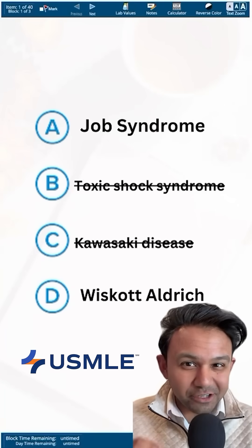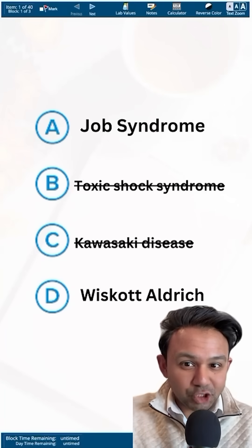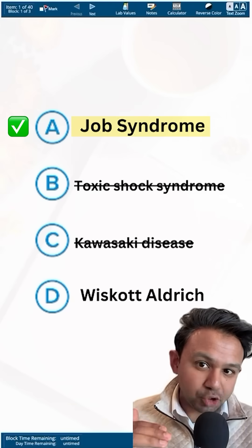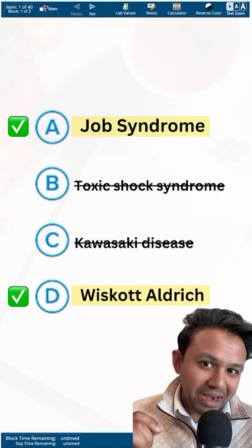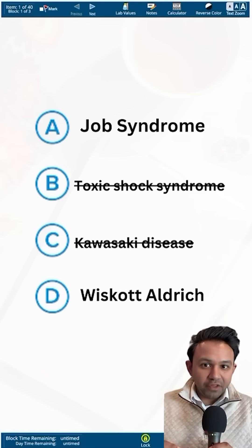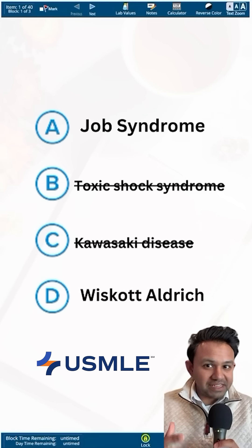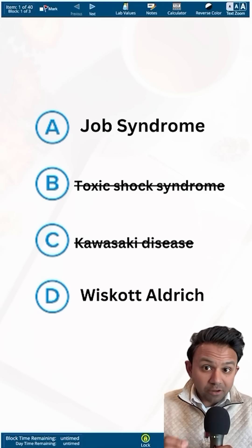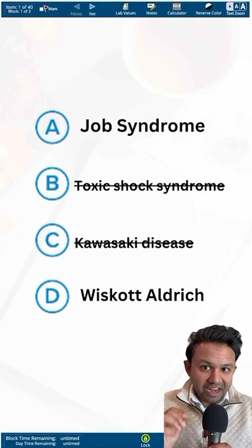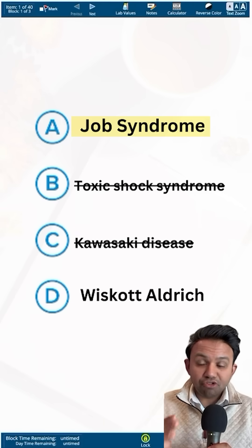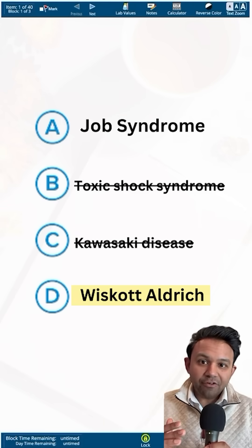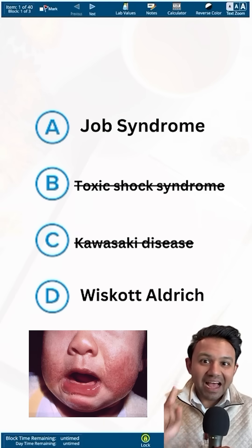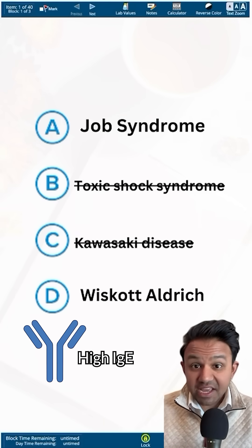On the USMLE, if you're stuck between answer choice A, Job syndrome, and answer choice D, Wiskott-Aldrich, both of these conditions present with recurrent infections and a characteristic skin lesion. Both Job syndrome and Wiskott-Aldrich present with eczema and high IgE in the labs.